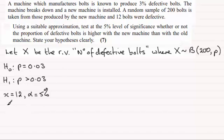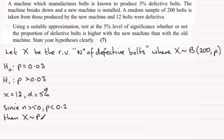I'm just going to write a note here and say that since n is greater than 50, it's a large value, 200 in this case, and P is less than 0.2, in other words it's now 0.03, then we can say that the random variable X is distributed as a Poisson distribution.